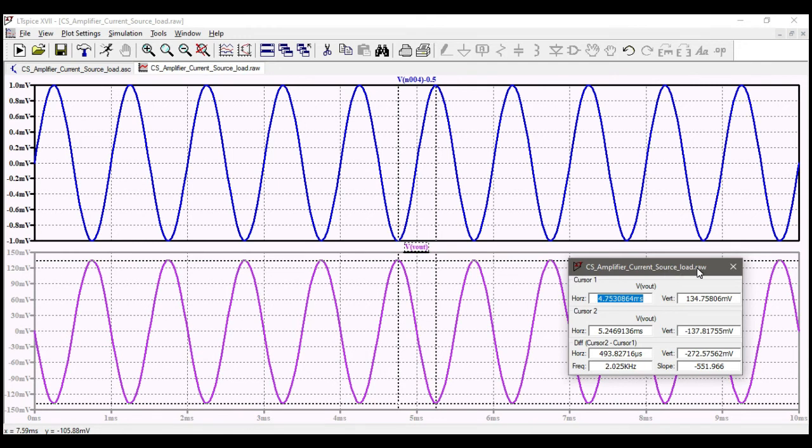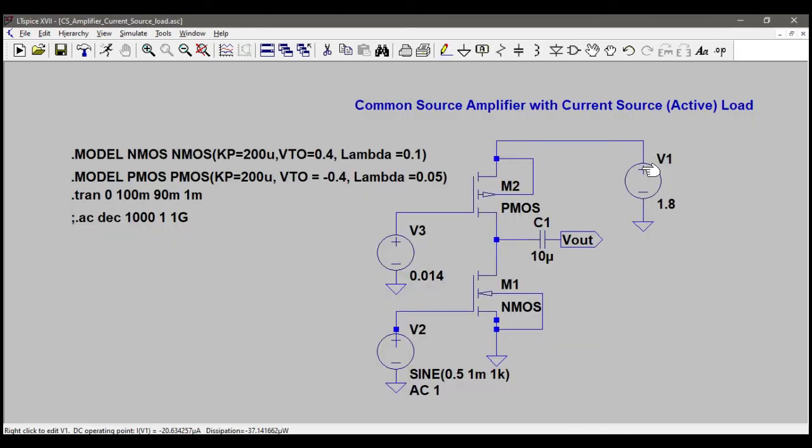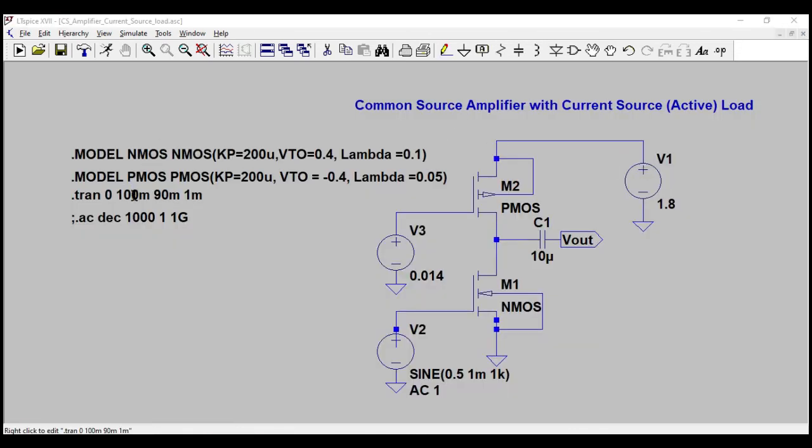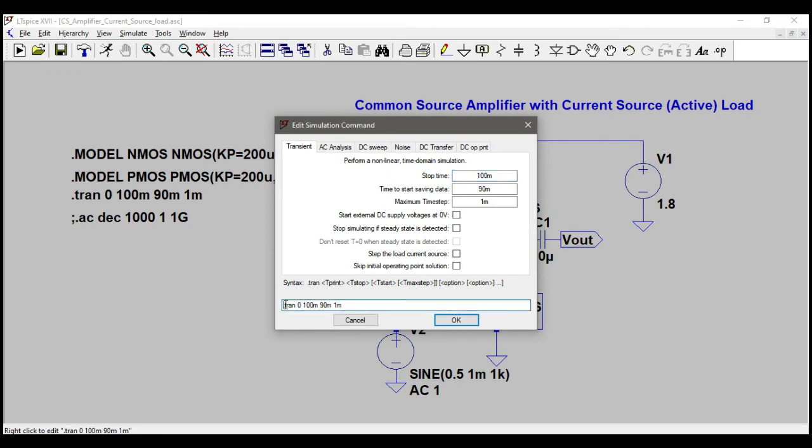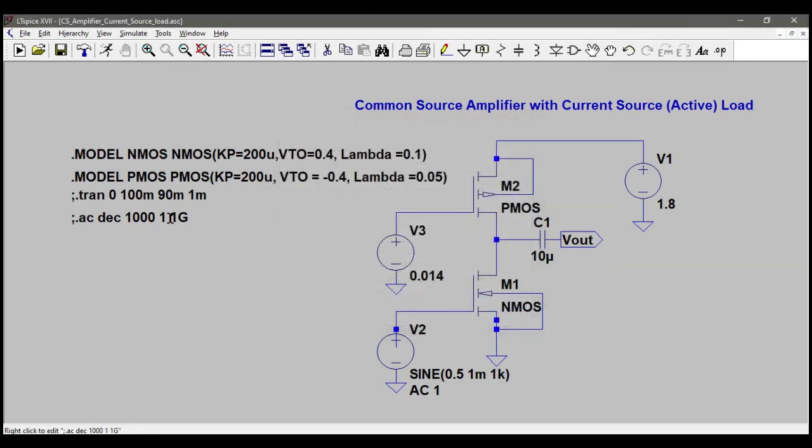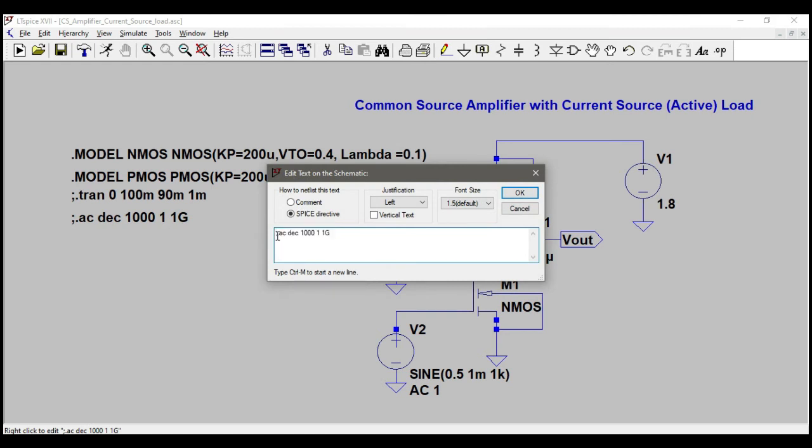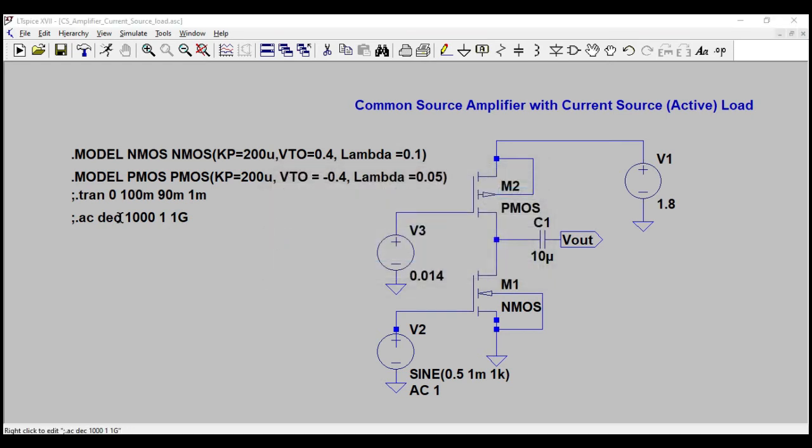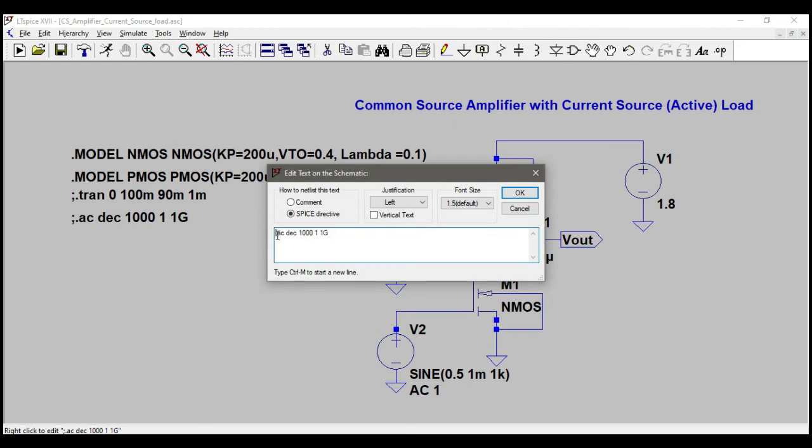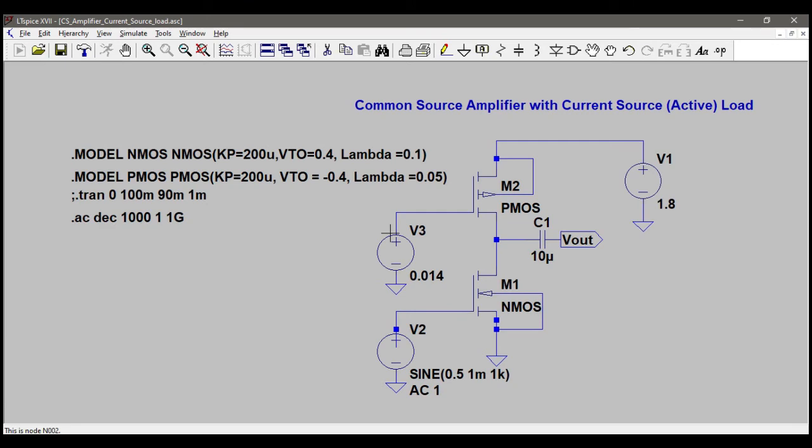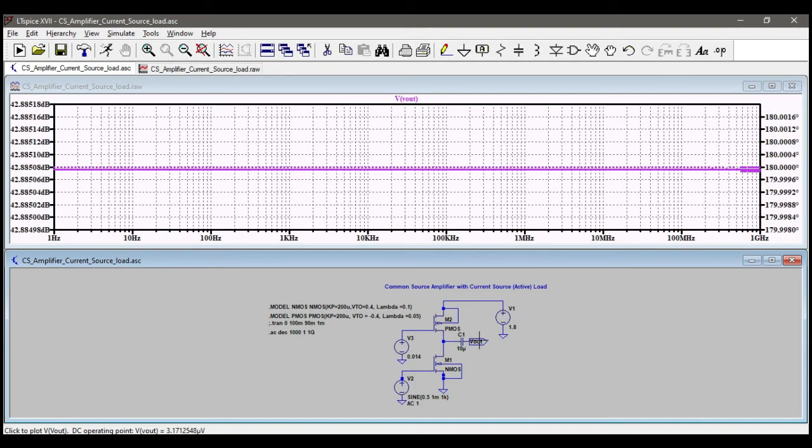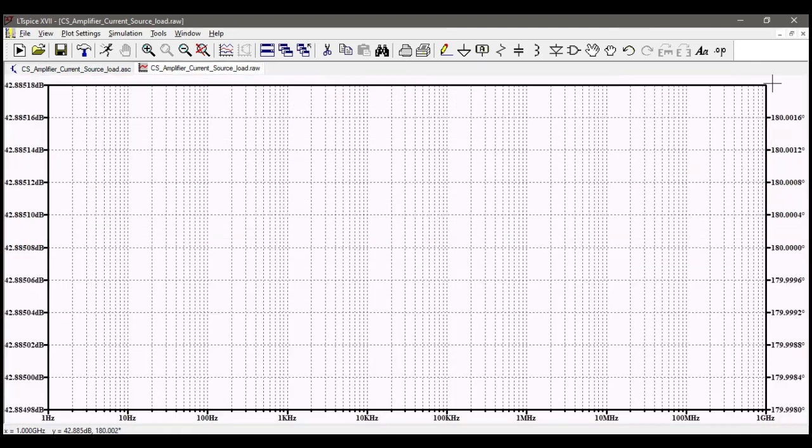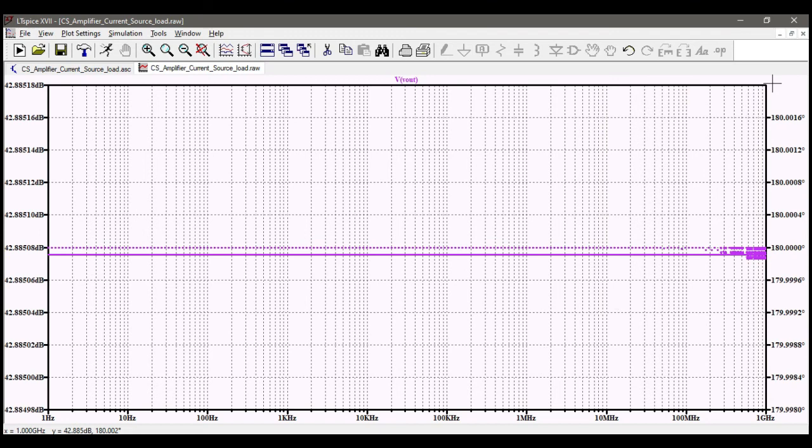You can also run the AC analysis and see the output. So I'll comment this transient analysis first by using a semicolon. Do it again and run the simulation and click on output. I'm going to get 42.88 dB. If you do again 10 power 42.88 divided by 20, you are going to get the same value, which is nothing but around 139.86 or something.